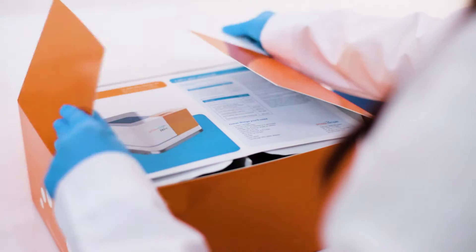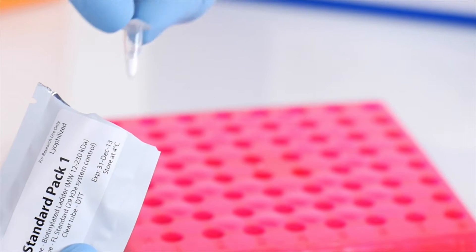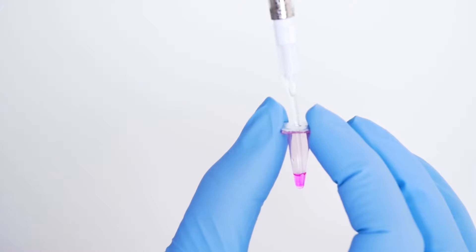Setting up an immunoassay on Wes is simple and you only need three microliters of sample. Just prepare the reagents and pipette them onto a plate. Load the capillary cartridge and place the plate on the plate holder.